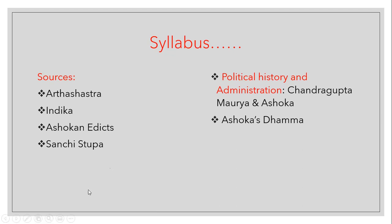As per the syllabus, we will be stressing on the sources. Under sources we have Arthashastra and Indica — both are literary sources. Then we have Ashokan Edicts and Sanchi Stupa — these are archaeological sources. For ICSE 9th standard, we also need to learn about the political history and administration of two great kings: Chandragupta Maurya and Ashoka, and finally Ashoka's Dharma.